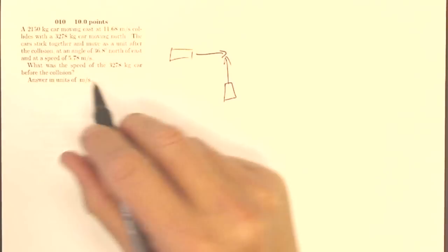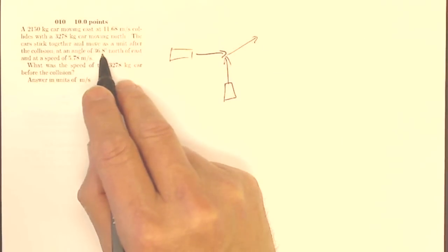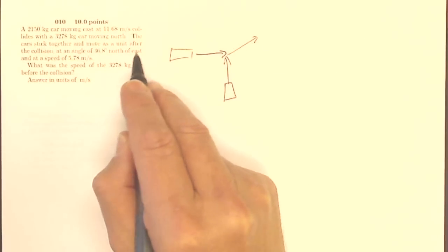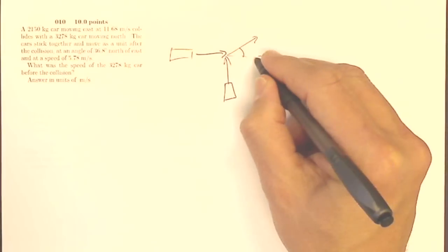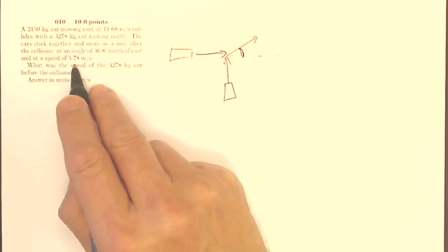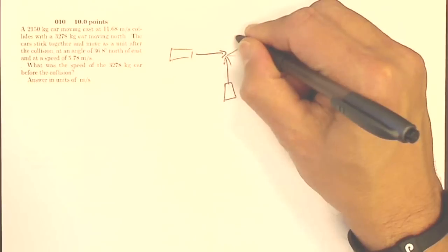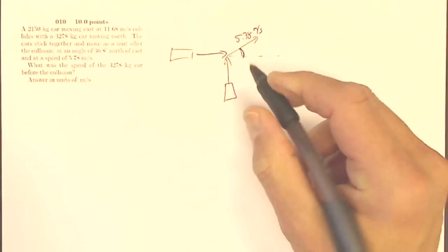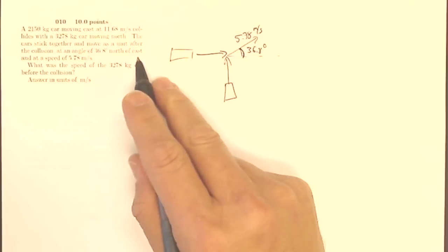The cars stick together and move as a unit after the collision at an angle of 36.8 degrees north of east. Since that's east and this is north, it's going to be north of east, so that's my theta, at a speed of 5.78 meters per second. So I've got a velocity here of 5.78 meters per second, and I've got an angle of 36.8 degrees north of east.